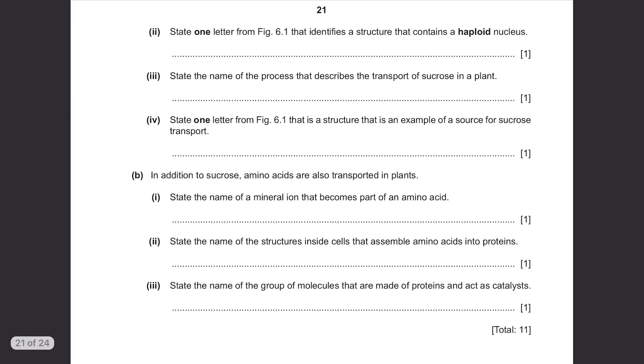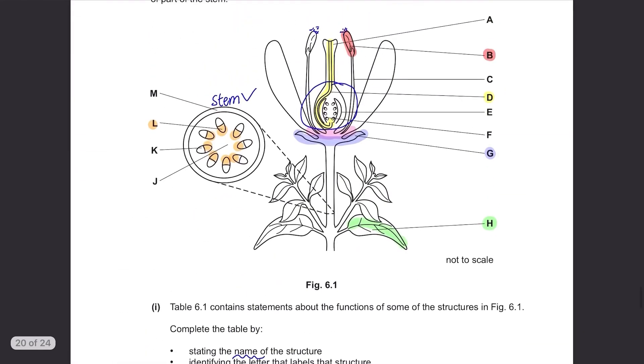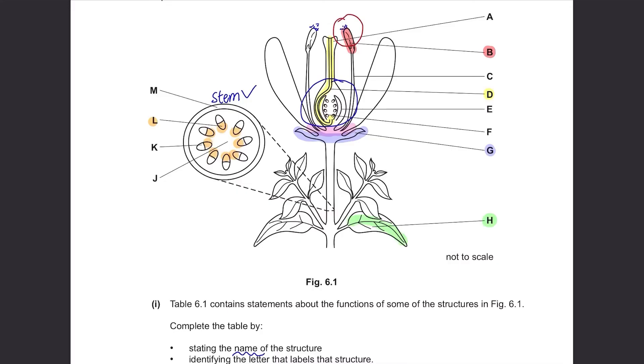State one letter from figure 6.1 that identifies a structure that contains a haploid nucleus. A haploid nucleus is inside the pollen so think about where the pollen can be in a flower. It can be at B, the anther where it is produced. Or it can be at D, the pollen tube where it is transported. Or it can be at F, inside the ovule. You just need to write 1.